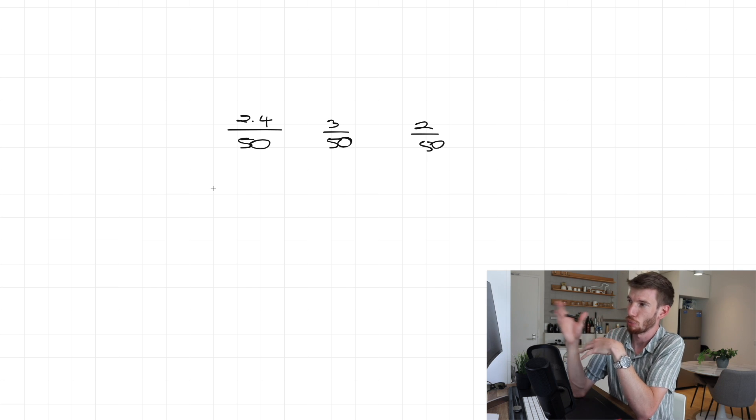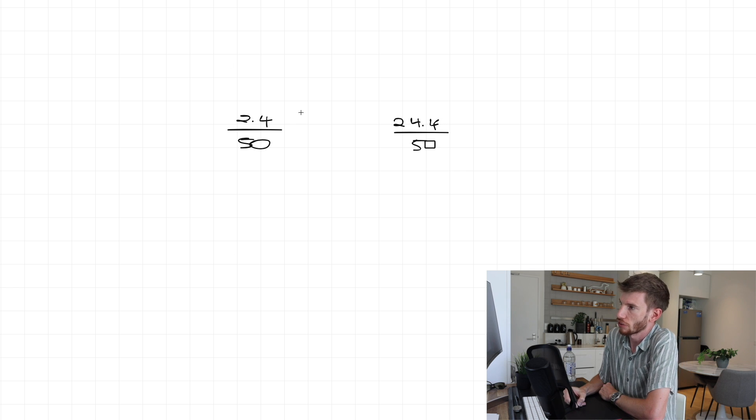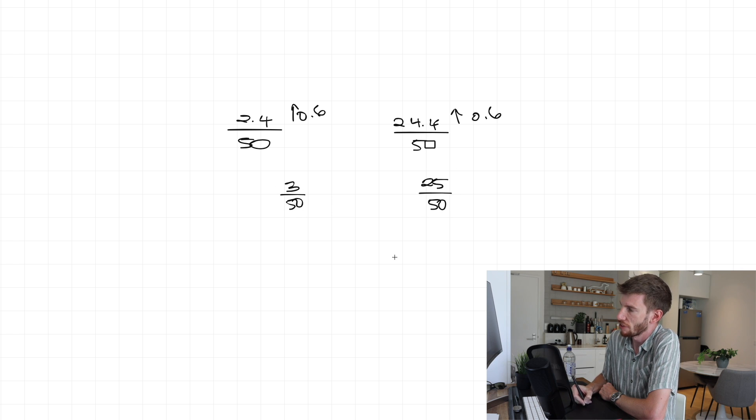So people might look at that and go, well, 0.4 down or 0.6 up to the next whole number, relatively small, and that's kind of true. But it also depends on what your actual value is. So if I was comparing that to 24.4 out of 50 instead, of course, I could put this one up by 0.6, and I could put this one up by 0.6. And in that result, then I would get three over here out of 50, versus this one over here would go up to 25 out of 50.